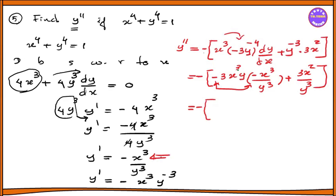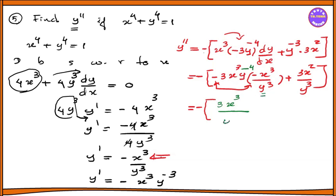y power minus 4. That's why y power minus 4 — the minus then minus is plus, giving 3x² times y power minus 4. Then y power 3, and y power 7.